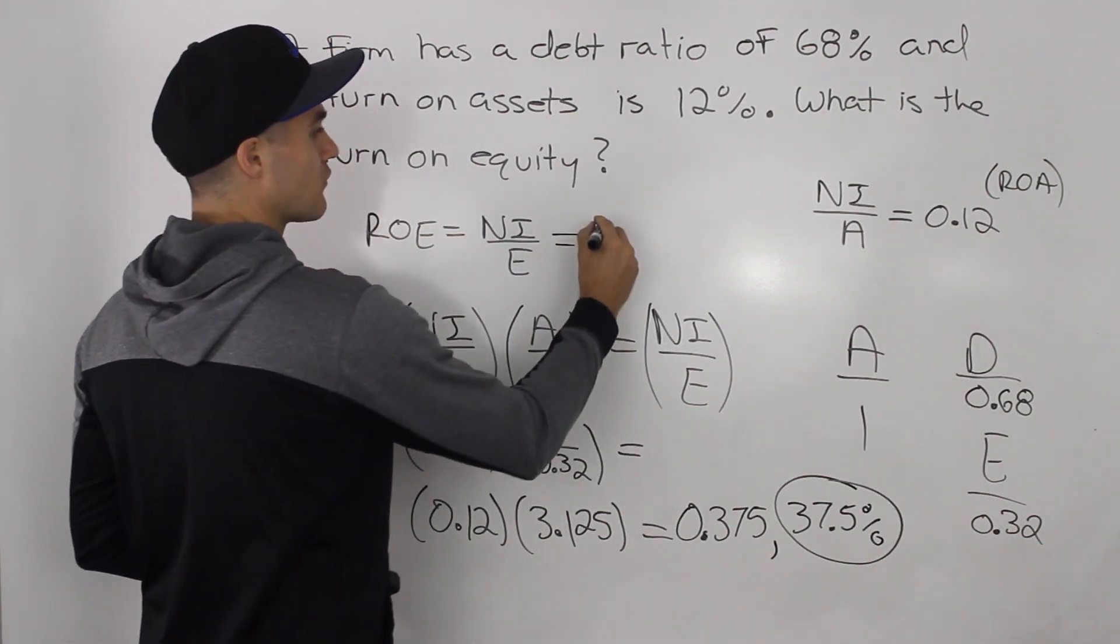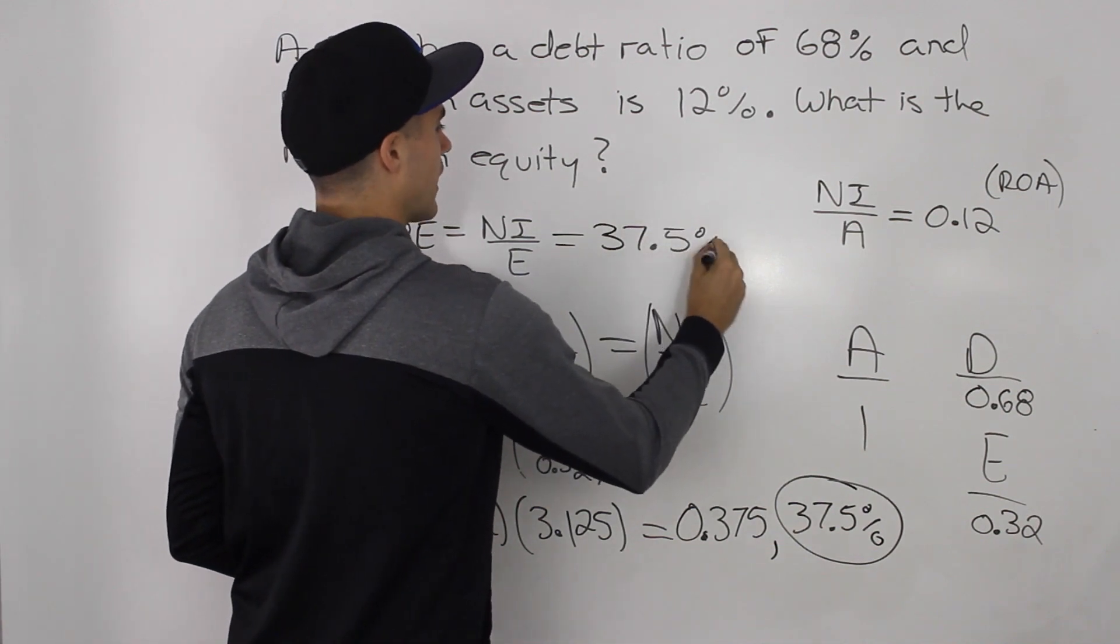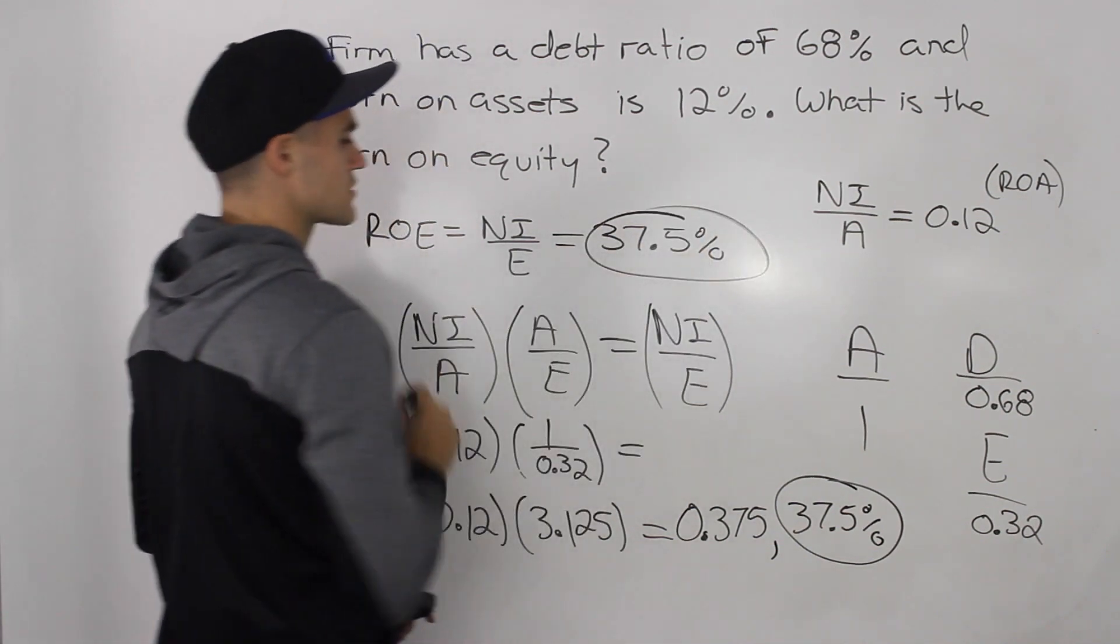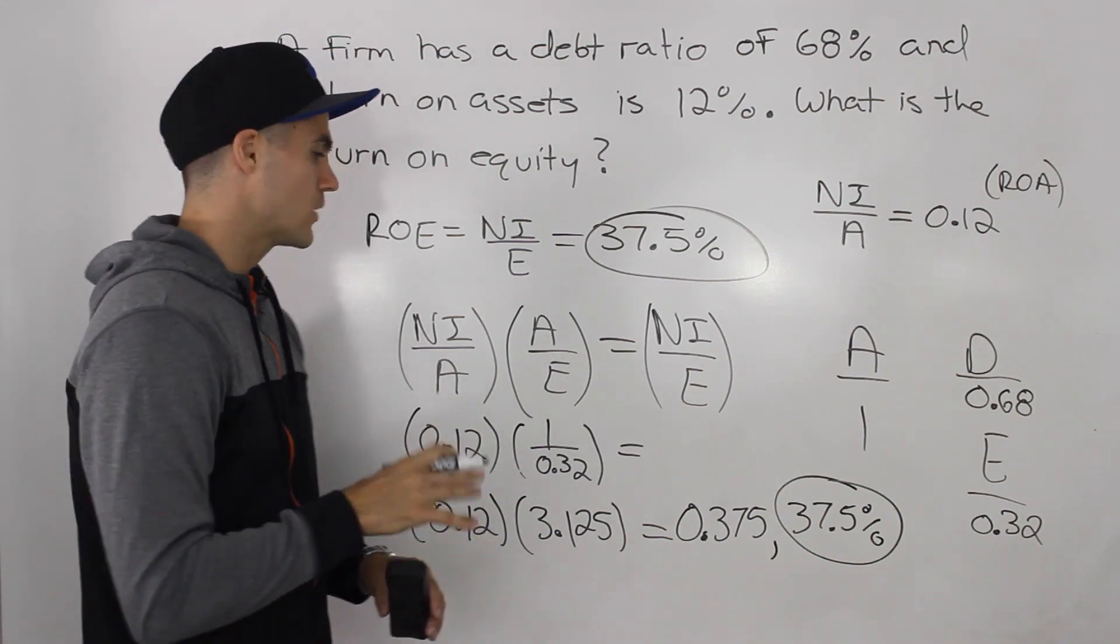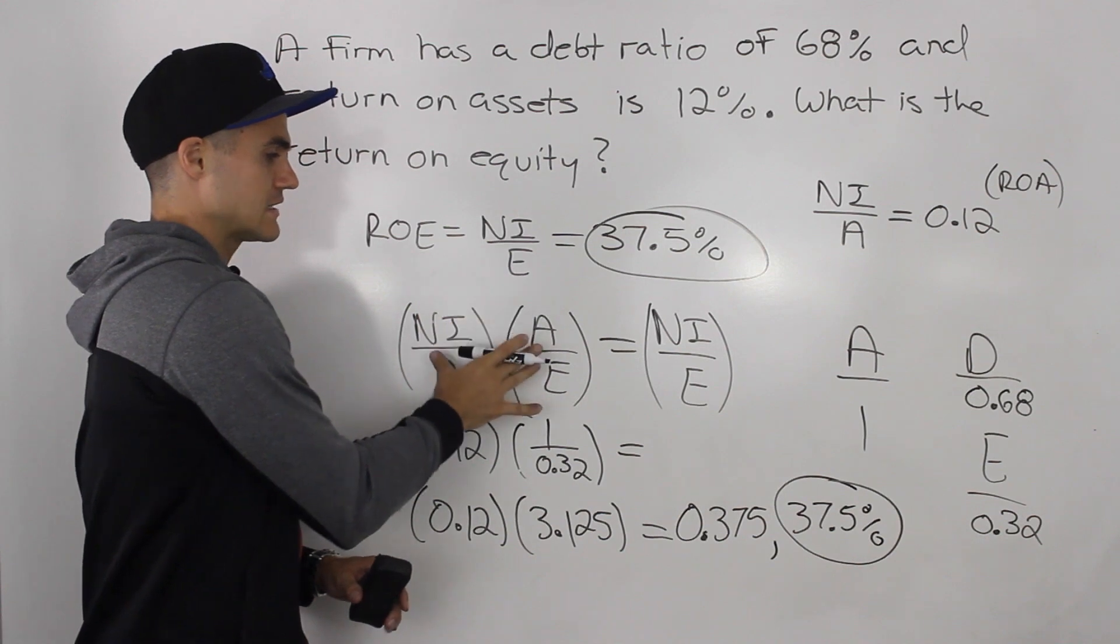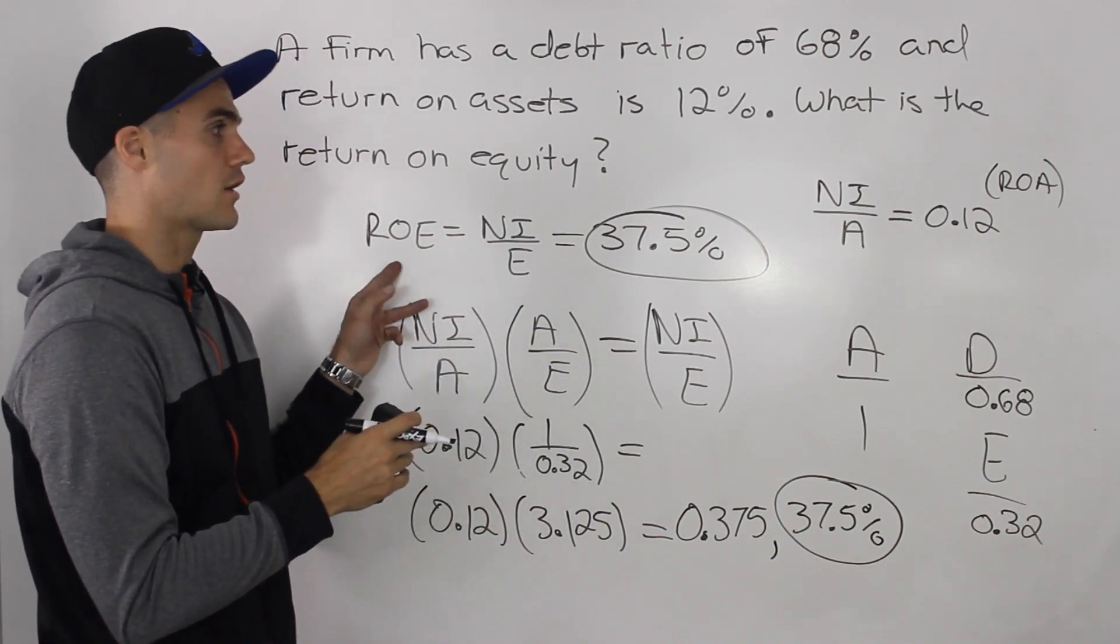So 0.375, 37.5% is this ratio here, net income over equity. And that's what we were finding. We were finding the return on equity. So the final answer is 37.5%. So if you remember, in the question before, when we did it this way, there was multiple ways to find that return on equity.